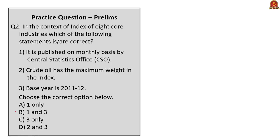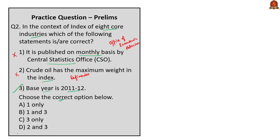Second question: In the context of 8 core industries, which statements are correct? Statement 1: it is published on a monthly basis by the Central Statistics Organization. Statement 2: crude oil has the maximum weightage. Statement 3: the base year taken for calculation is 2011-12. Statement 1 is wrong — the Index of 8 Core Industries is published by the Office of the Economic Advisor, not CSO. Statement 2 is also wrong — refinery products have the maximum weightage, not crude oil. Statement 3 is correct — the base year is 2011-12. The correct answer is option C, 3 only.